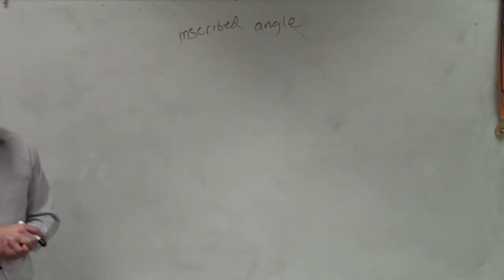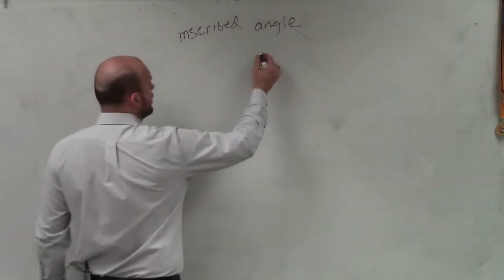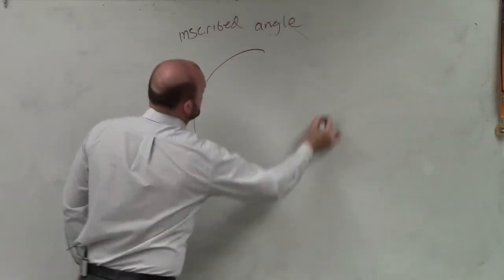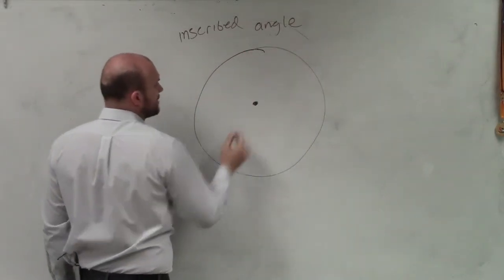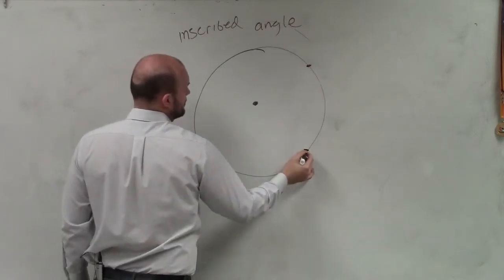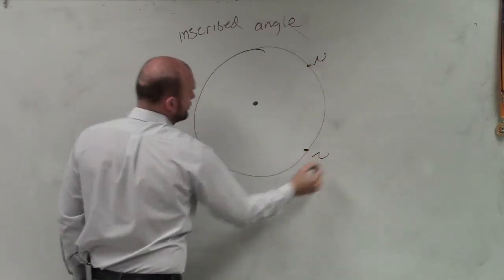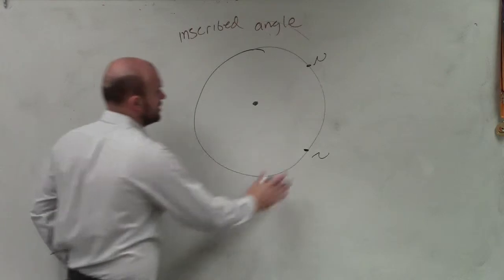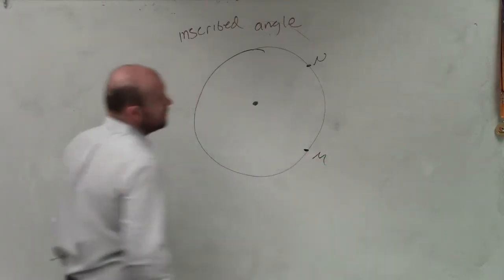So this is going to be talking about, again, going back through inscribed angles. And all I want to remind you guys of, when we're talking about an inscribed angle, remember an inscribed angle has two endpoints. They can be anywhere on the circle. N and let's call them M.